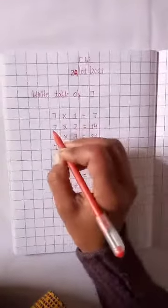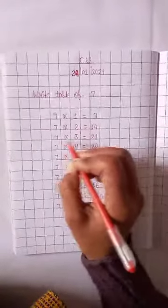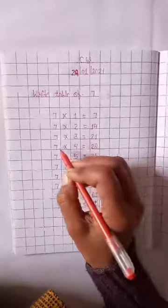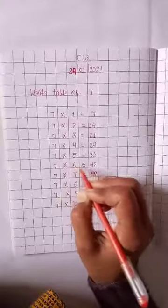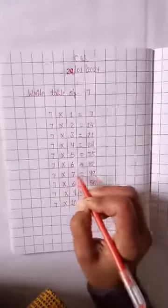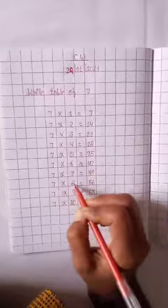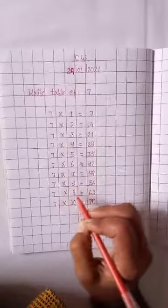Seven, one times, seven. Seven, two times, fourteen. Seven, three times, twenty-one. Seven, four times, twenty-eight. Seven, five times, thirty-five. Seven, six times, forty-two. Seven, seven times, forty-nine. Seven, eight times, fifty-six. Seven, nine times, sixty-three. Seven, ten times, seventy.